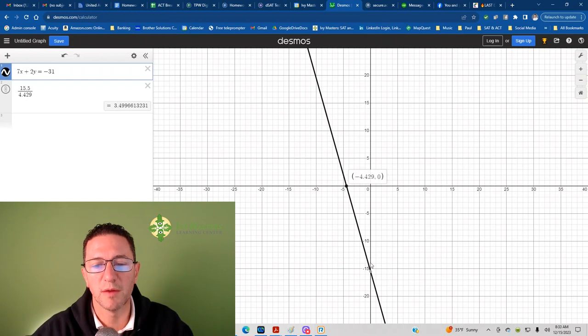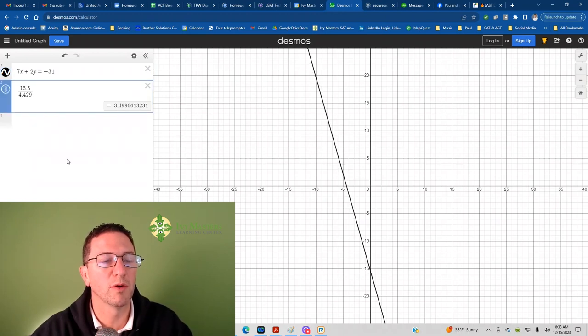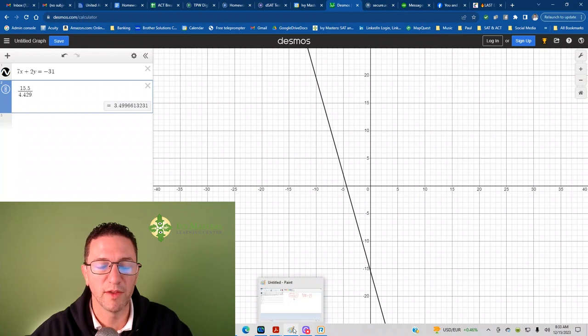Then you just scroll over, see what your x intercept and y intercept are, and put it there. You would have to round this off because it rounded to 4.429, and 3.5 is also acceptable rather than that crazy decimal.